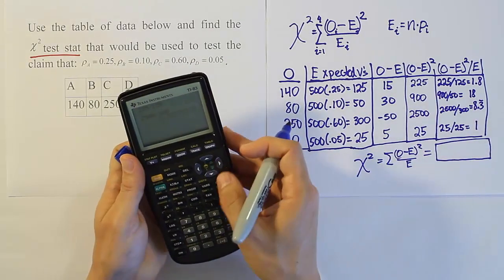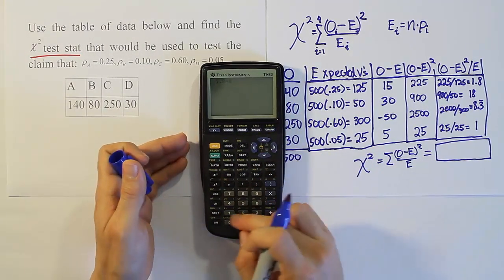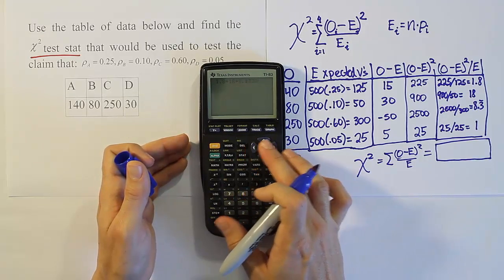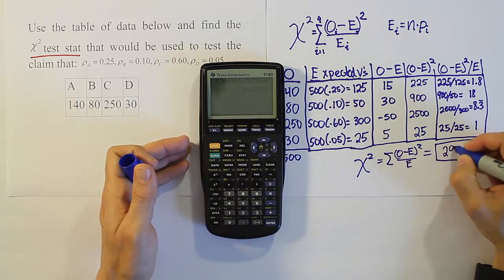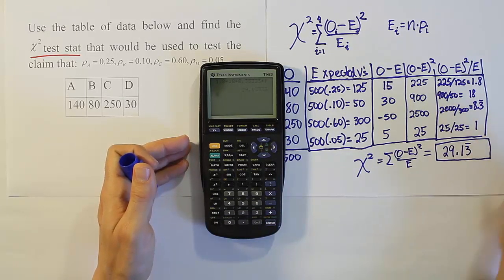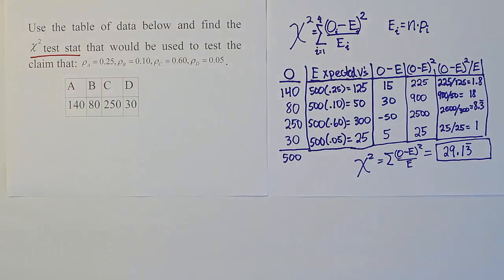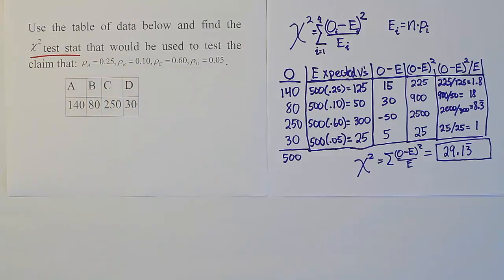Alright, let's add all these together now in our calculator. So we'll have 1.8 added to 18, added to 8.3 repeating, added to 1. And when we're done, we get the answer 29.13 repeating. Alright, so that's basically our chi-squared test stat then, 29.13 repeating. In this case, we were dealing with expectations that involve specific probabilities provided to us in the null hypothesis. In the video before, we dealt with the scenario where they were all supposed to be equal. But you can see that both problems are pretty straightforward, pretty simple. It's just a lot of work to calculate all these columns to get our final answer for the test stat.